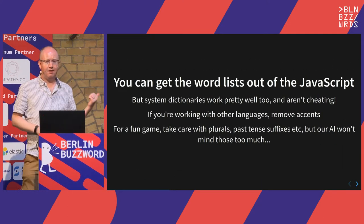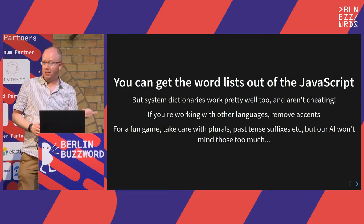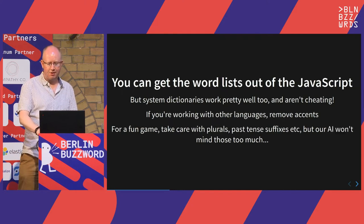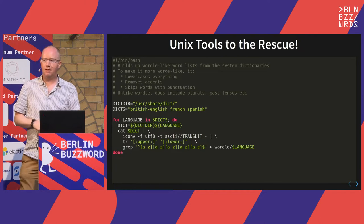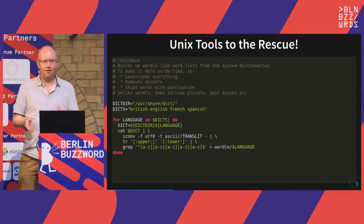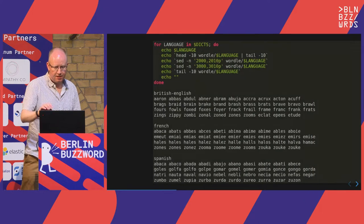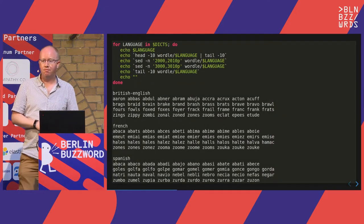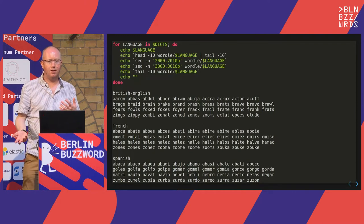The word list you're going to need — there is one in the JavaScript, but it has changed a few times and I don't want to get into trouble with lawyers. So instead we're going to use the Ubuntu system dictionary. About six lines of shell script will grab all of the five-letter words from a system dictionary, remove all those pesky accents, deal with case normalization, and give us some five-letter words. Different languages, different words.